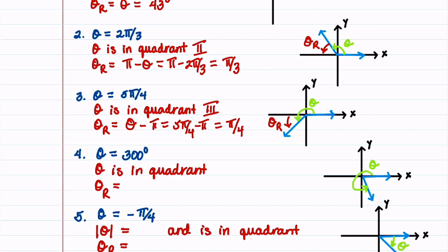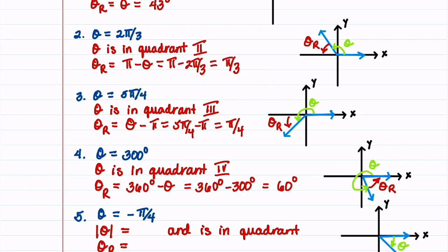In our fourth problem, theta is 300 degrees, so theta is in quadrant 4. That gives us theta sub r equal to 360 degrees minus theta — notice we're working in degrees instead of radians — so 360 degrees minus 300 degrees equals 60 degrees.